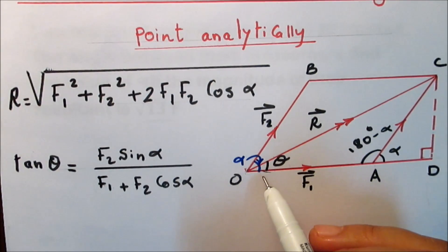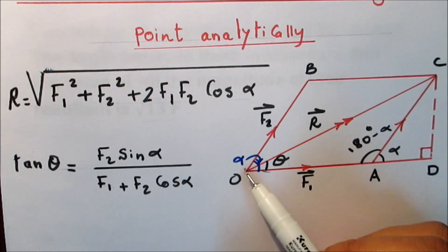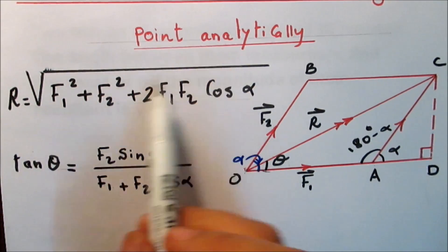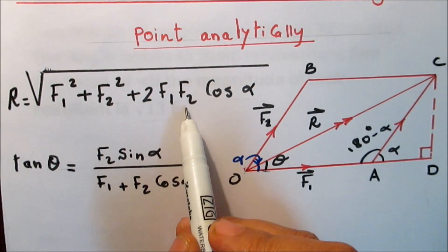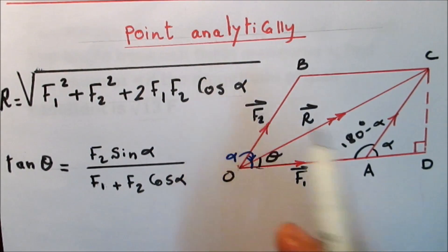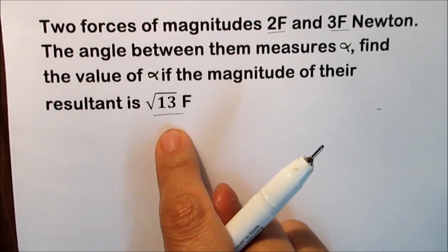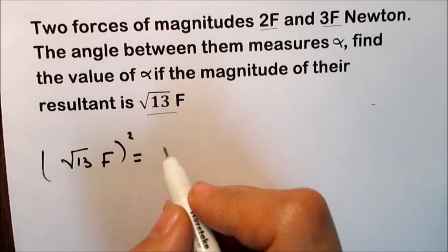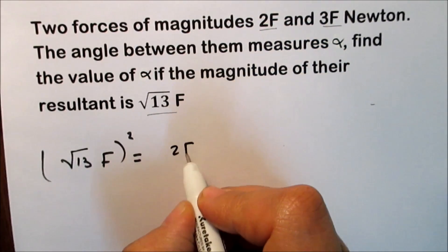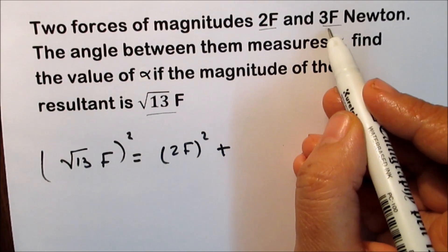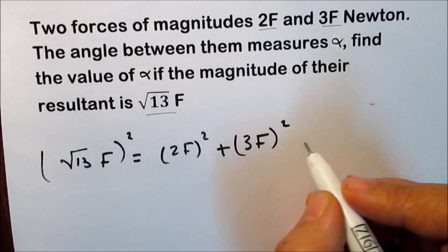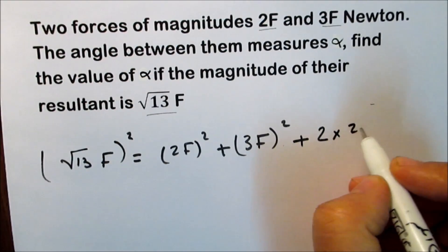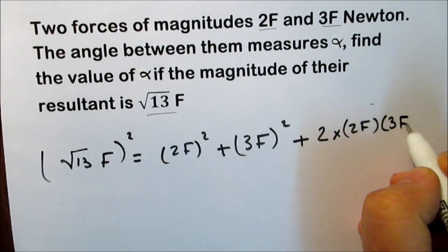We have two forces that meet at a point. By the parallelogram rule, the resultant is represented by the diagonal of the parallelogram. So the resultant equals √(F1² + F2² + 2·F1·F2·cos α), where alpha is the angle between the two forces. The given resultant is √13f, so the resultant squared is 13f².